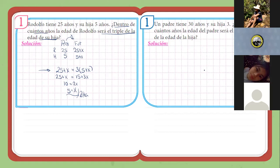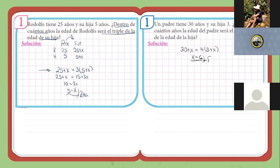Ya pasó un minuto. Vamos a intentar el ejercicio. Sabemos que tenemos que ganarle tiempo al tiempo hoy, porque tenemos que hacer dos clases en una. Planteo rápidamente: la edad del padre tiene 30 años y su hija 3 años. ¿Dentro de cuántos años la edad del padre, cuando tenga 30 más X, será el cuádruple de la edad de su hija, o sea, 3 más X? Resolviendo, sería 6. Ya varios me han enviado 6, así que 6 como respuesta. Muy similar al anterior.